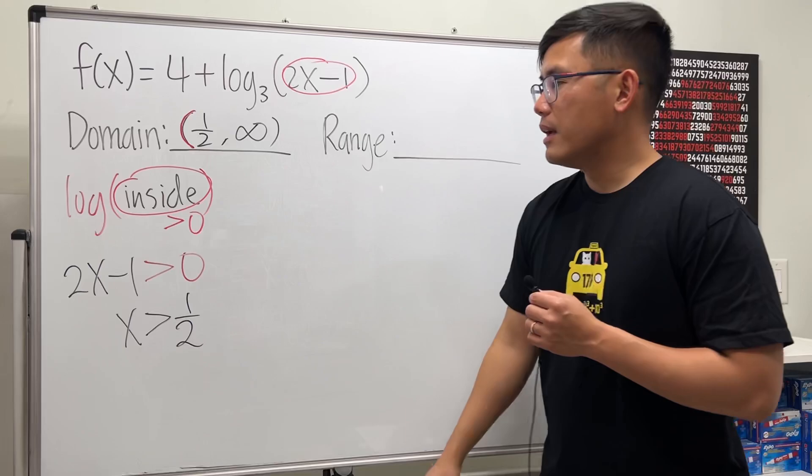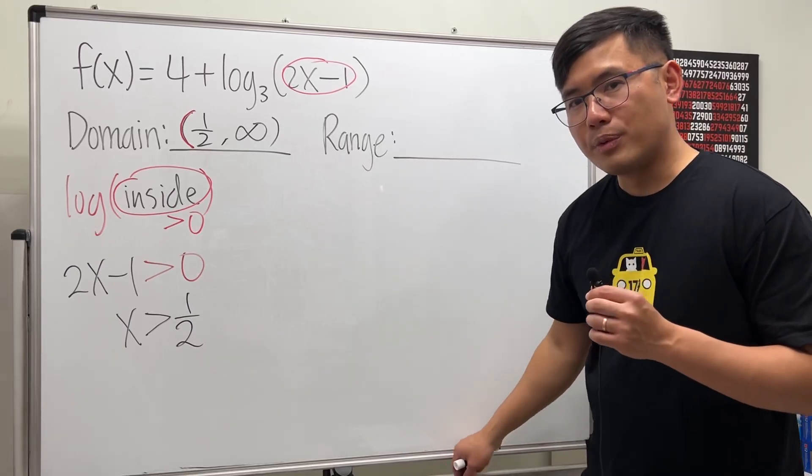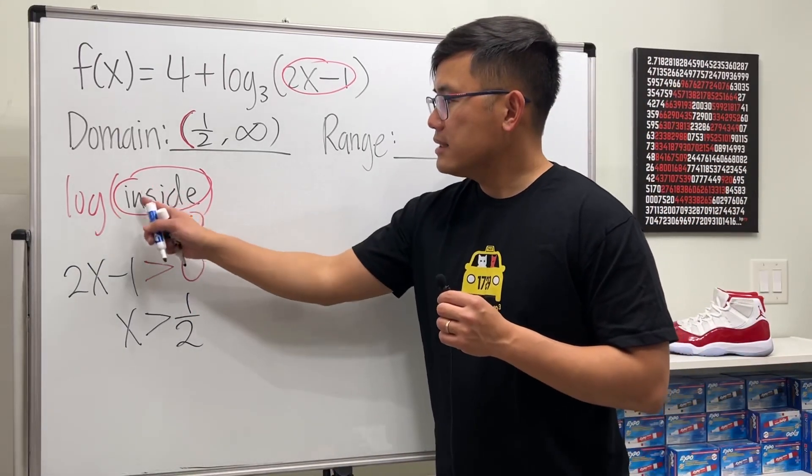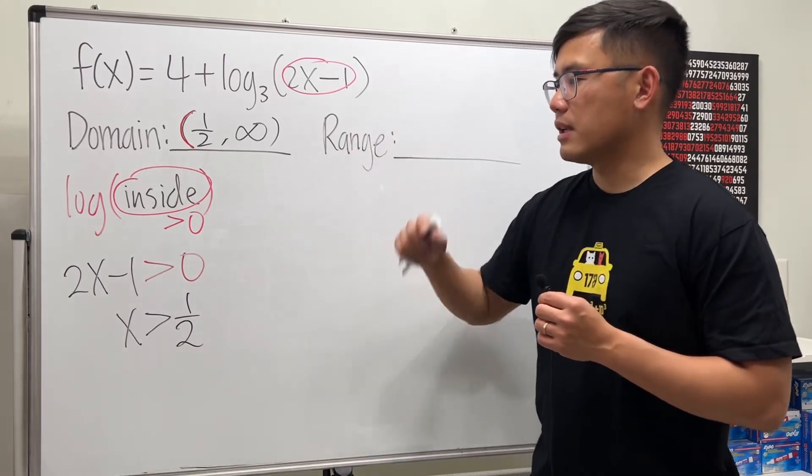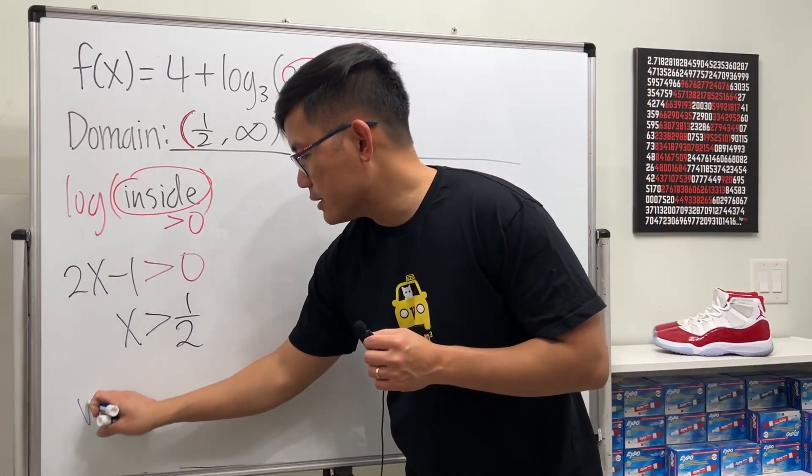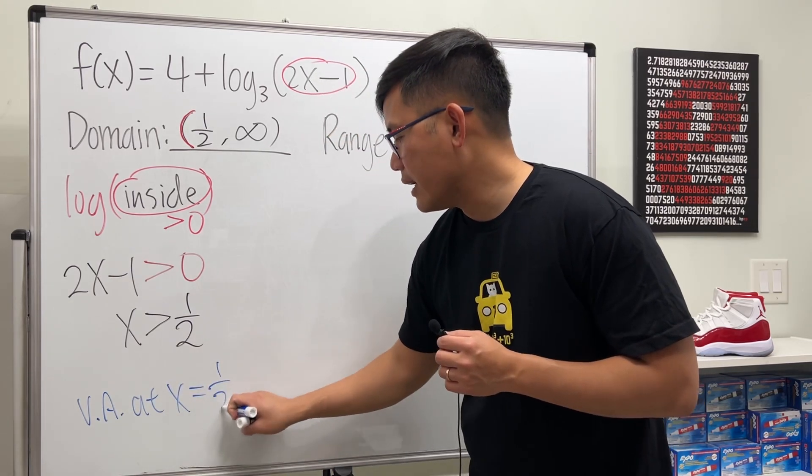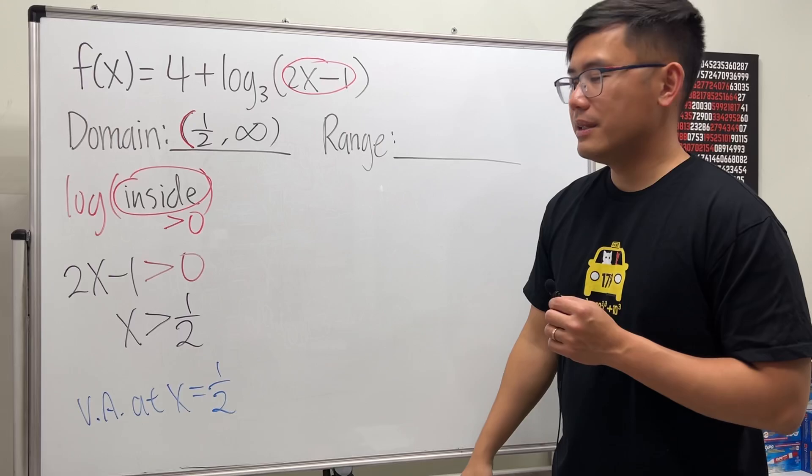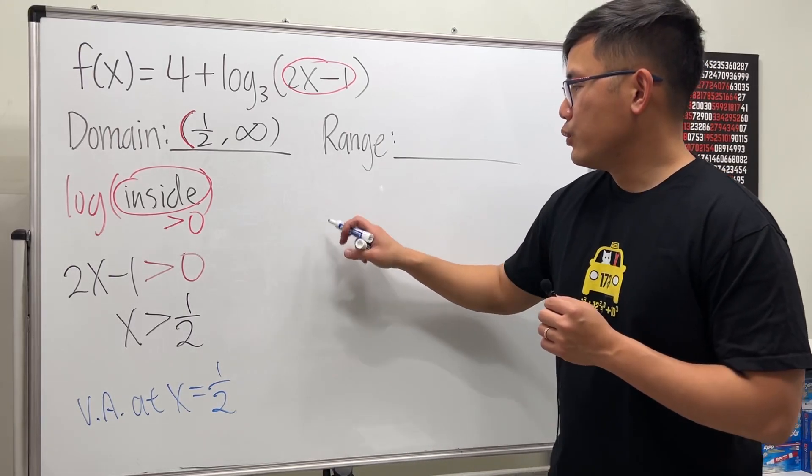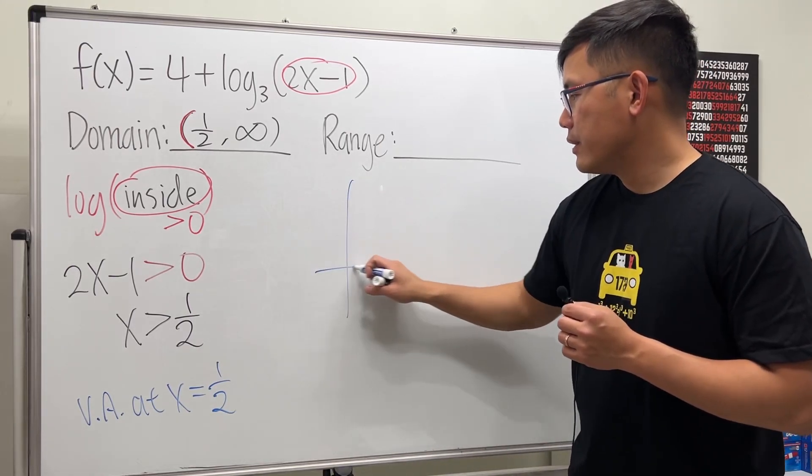I'll give you guys a small bonus: when the inside is equal to zero, once we have this kind of situation, we can say that we have a vertical asymptote at x equals one half.